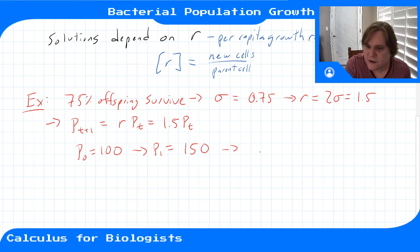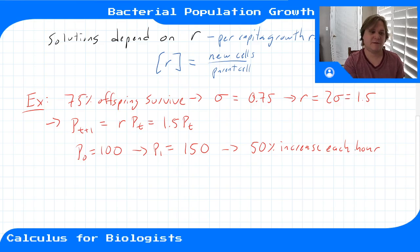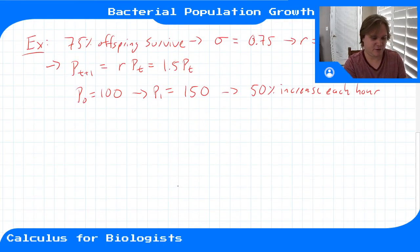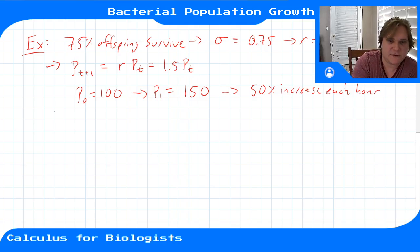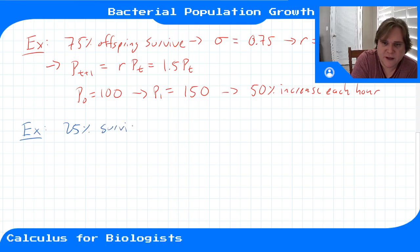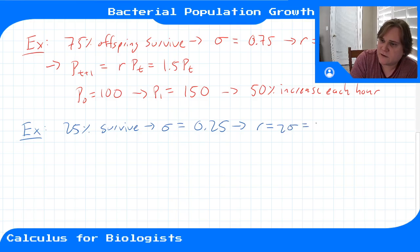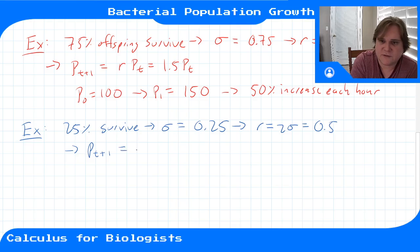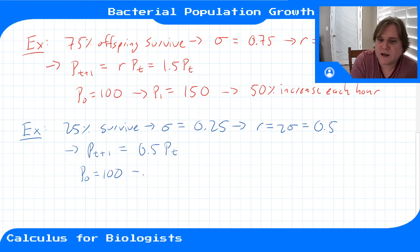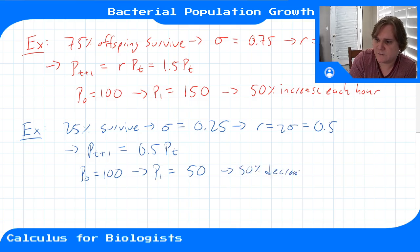If we start with 100 individuals, then p(1) = 150 — a 50 percent increase each hour. Now let's say they're on an even more perilous petri dish where only 25 percent survive. Then sigma = 0.25, so r = 0.5. Our model is p(t+1) = 0.5·p(t). Starting with 100 individuals, after one hour we have 50 — a 50 percent decrease each hour.